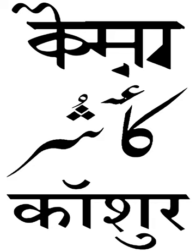There are three orthographical systems used to write the Kashmiri language: the Sharada script, the Devanagari script, and the Perso-Arabic script. The Roman script is also sometimes informally used, especially online. The Kashmiri language is traditionally written in the Sharada script after the 8th century AD; however, this script is not in common use today, except for religious ceremonies of the Kashmiri Pandits. Today it is written in Perso-Arabic and Devanagari scripts with some modifications. Kashmiri is one of the very few languages written in the Perso-Arabic script that regularly indicates all vowel sounds. The Kashmiri-Perso-Arabic script is associated with Kashmiri Muslims, while the Kashmiri-Devanagari script is associated with the Kashmiri Hindu community.